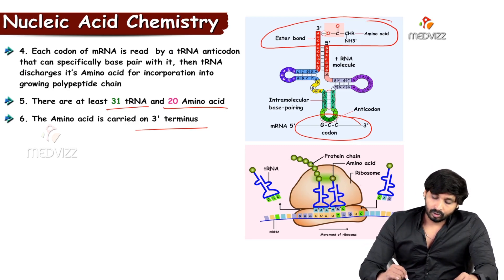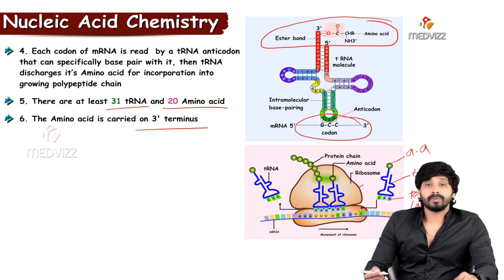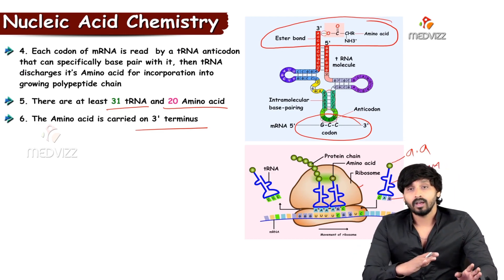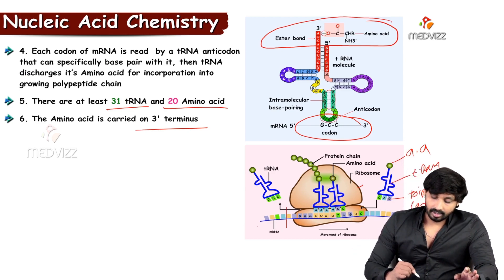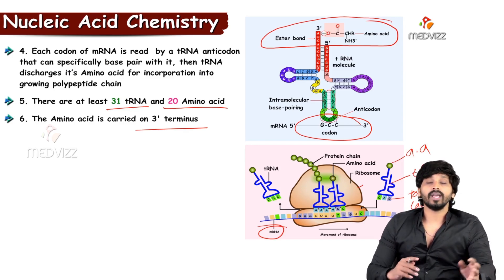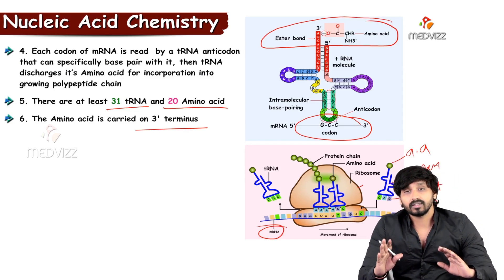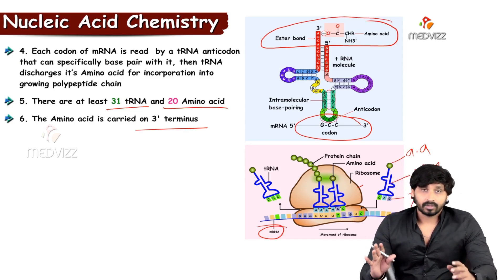You see here, ribosomes, and this is the tRNA. This green color is amino acid. It is carrying triplet codon, and this triplet codon has to be attached to the mRNA. This is the mRNA. This way, the whole protein synthesis happens.